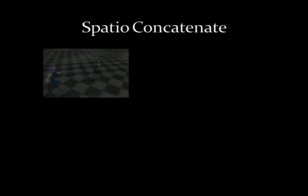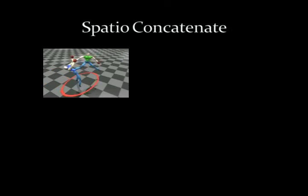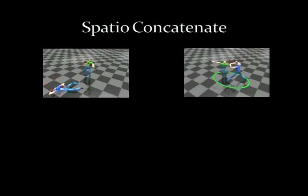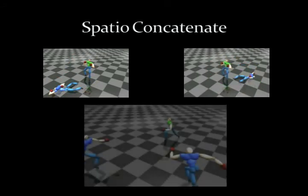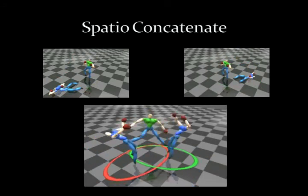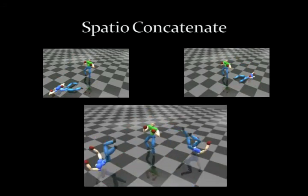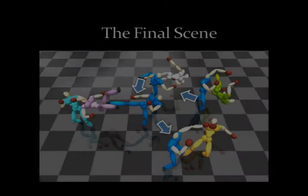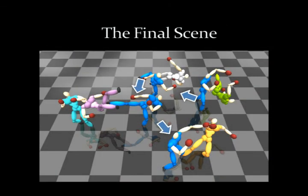Similarly, the patches can be spatially concatenated to generate interactions that involve more characters. The two patches above are concatenated to generate the scene below. By concatenating interaction patches, we can compose a large scale scene where multiple characters continuously interact with each other.